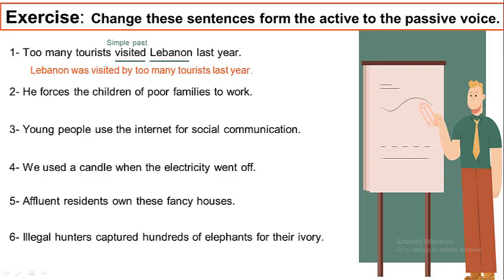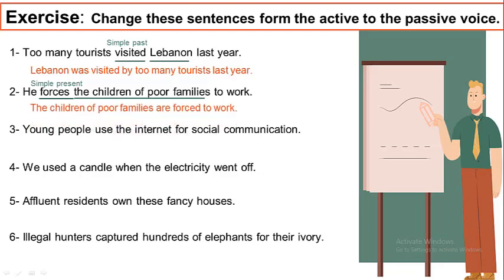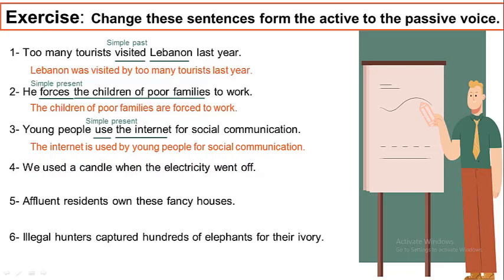Number two: he forces the children of poor families to work. The main verb here is forces, and the tense is the simple present tense — forces ends with an s as in the simple present tense, it doesn't have an -ed. The receiver of the action is the children of poor families. Who does he force? He forces the children of poor families. Thus the sentence will be: the children of poor families are forced to work. Number three: young people use the internet for social communication. The main verb is use, and it is in the simple present tense as it doesn't have an -ed. What do young people use? They use the internet — it's our receiver. Thus the passive voice of the sentence will be: the internet is used by young people for social communication.